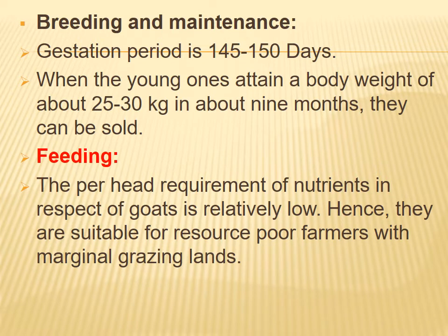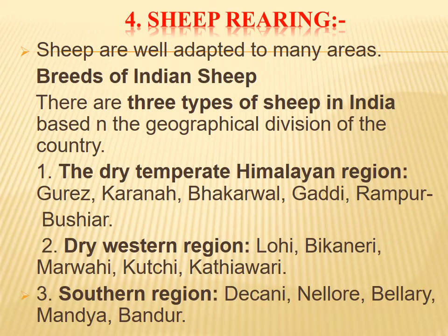Breeding and maintenance for goats: gestation period is 145 to 150 days. The young ones attain a body weight of about 25 to 30 kg in about nine months and can be sold. The per head nutrient requirement for goats is relatively low, making them suitable for farmers with marginal grazing resources.